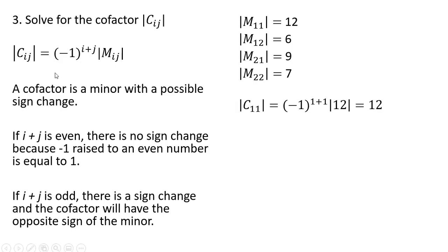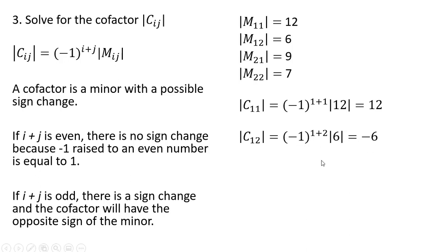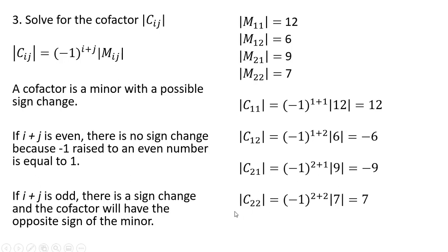Rewriting our minors and applying the formula: for row 1, column 1, minus 1 raised to the power of 2 is just 1, so there's no sign change — the cofactor is 12. For row 1, column 2, we get a sign change because 1 plus 2 is odd, so we get minus 1 times 6, giving minus 6. There's another sign change for row 2, column 1, and row 2, column 2 has no sign change since row plus column is even.